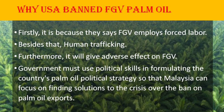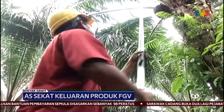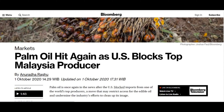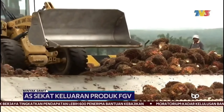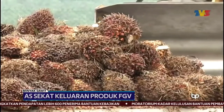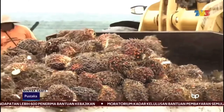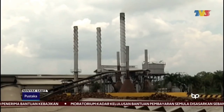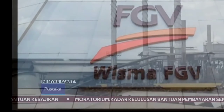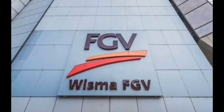Why did the U.S. ban FGV palm oil? Firstly, because they claim FGV employs forced labor. The U.S. claims that FGV is using forced labor through physical and sexual violence, threats, and document confiscation. The U.S. also claimed that child forced labor has been used in the palm oil production process.